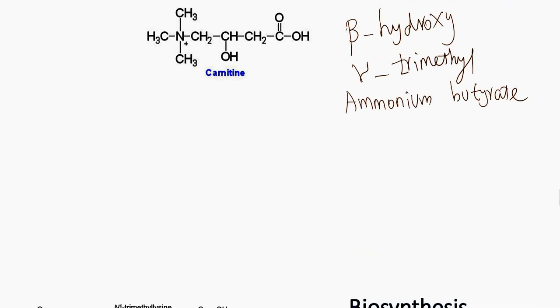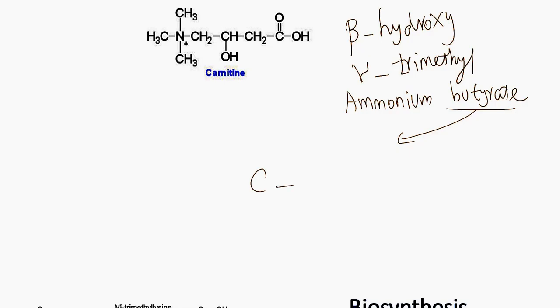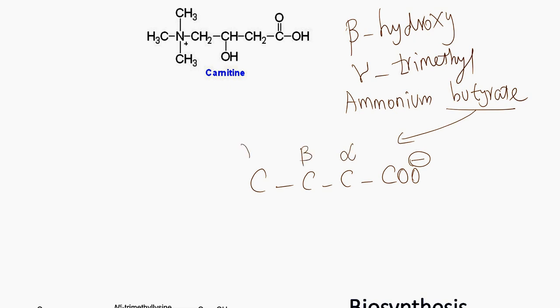Let us write the structure. It is butyrate, so put 4 carbons. This is butyric acid. As it is butyrate, it is negatively charged at physiological pH. The carbon to which the functional group is attached is the alpha-carbon. This is your beta-carbon. This is your gamma-carbon.